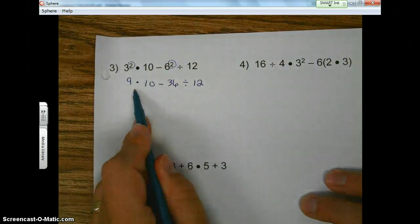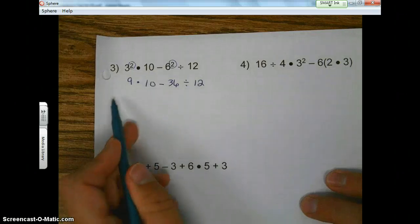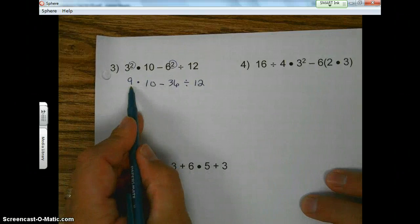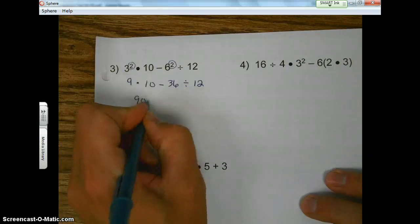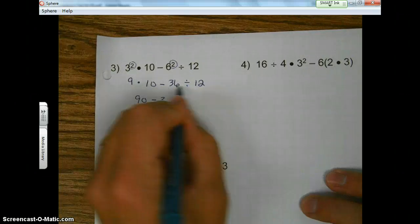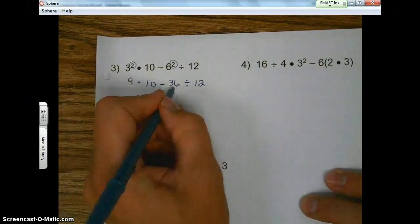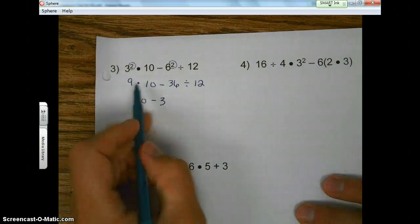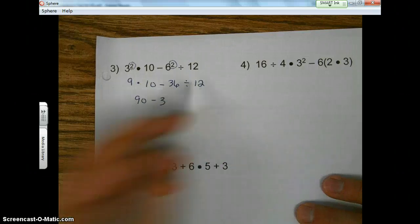Okay? So PEMDAS. Please excuse. Okay, my dear. So multiplying and dividing from left to right. So starting on the left, we got multiplication. Okay, that's subtraction, so we're going to save that. And actually, before I bring down this, let's go ahead and do the division. 36 divided by 12 is 3. So I did the multiplying, and I did the division second, left to right.